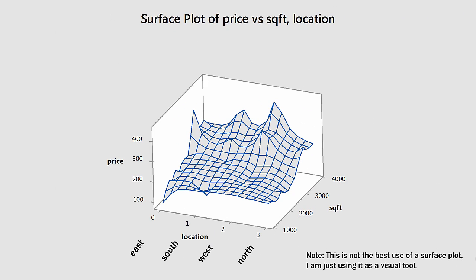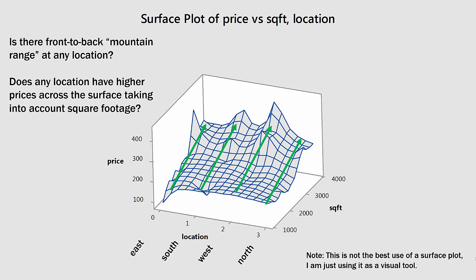Here's a surface plot of price and square footage again, but this time location is on the front axis. We're looking for front-to-back mountain ranges at any location. They all tend to follow the same basic pattern. The east region has one spike at around 3,000 square feet. The south goes up as it proceeds to the back. The west region really increases in price and square footage as it goes toward the back. The north, maybe a little bit less so. So the west region seems to have the biggest change in square footage and price as we increase both of those dimensions.